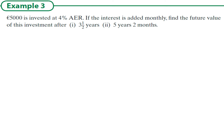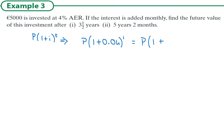Let's take an example: five thousand euro invested at four percent AER where interest is added monthly. Find the future value after three and a half years, or five years and two months. First, I need to find the monthly rate. Using the formula, investing at four percent — 0.04 — for one year should be the same as investing at some monthly rate r for 12 months. When we set these equal the P's cancel.